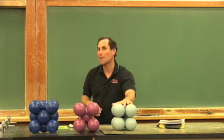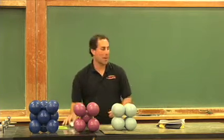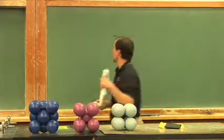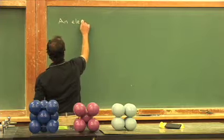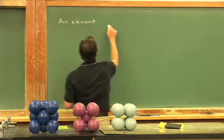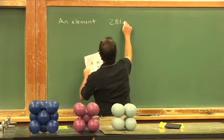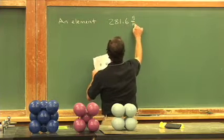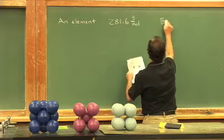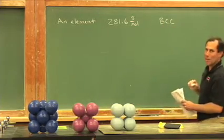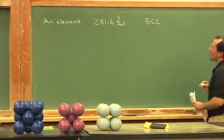We can use this information to calculate the density of a solid, and I made up a little problem here. It says that we have an element, and the molar mass has been measured to be 281.6 grams per mole. It's known that this thing goes body-centered cubic from x-ray diffraction data,